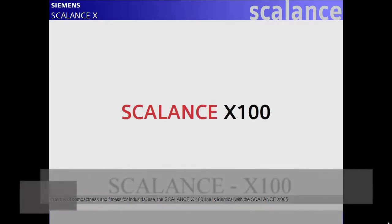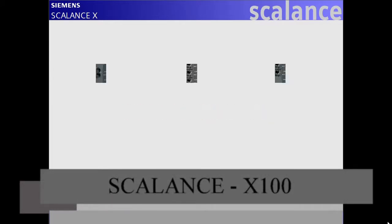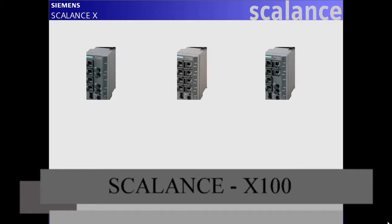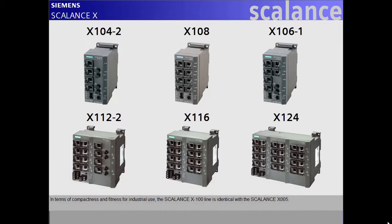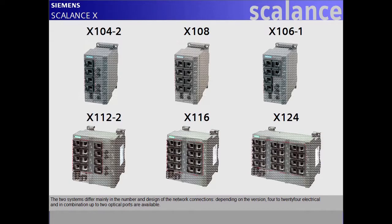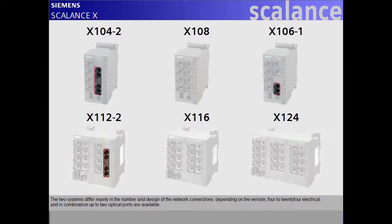In terms of compactness and fitness for industrial use, the Scalance X100 line is identical with the Scalance X005. The two systems differ mainly in the number and design of the network connections. Depending on the version, 4 to 24 electrical and in combination up to two optical ports are available.